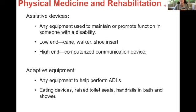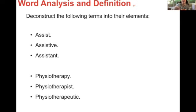Assistive devices literally assist the person to do something. Low-end assistive devices: cane, walker, shoe insert. High-end are going to be like the computerized communication device — something that costs a lot of money. Adaptive equipment is anything that helps perform an ADL — like a lift chair for someone who can't easily stand up, eating devices, raised toilet seats, handrails, and in-bath and shower items.